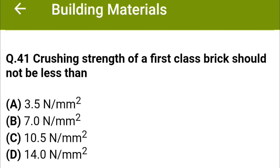Hello friends, welcome to Civil Engineering Exam. Today we are going to see MCQs related to building materials. Crushing strength of a first class brick should not be less than: option A 3.5 N/mm², option B 7.0 N/mm², option C 10.5 N/mm², option D 14.0 N/mm². The correct answer is option C: 10.5 N/mm².